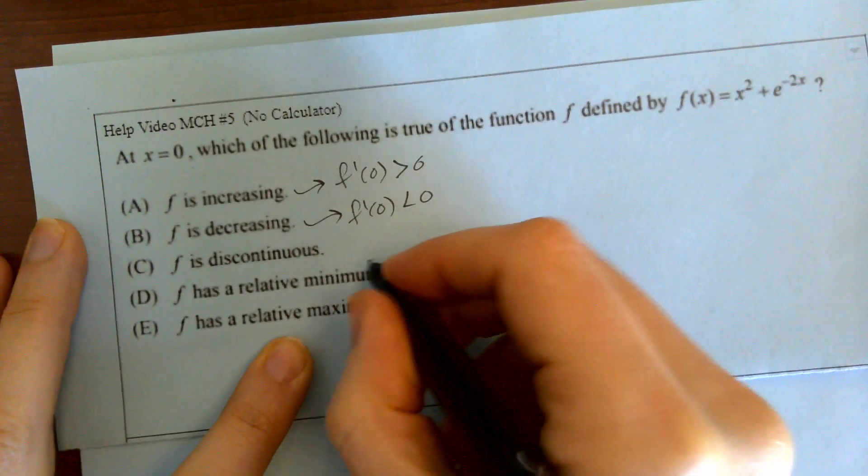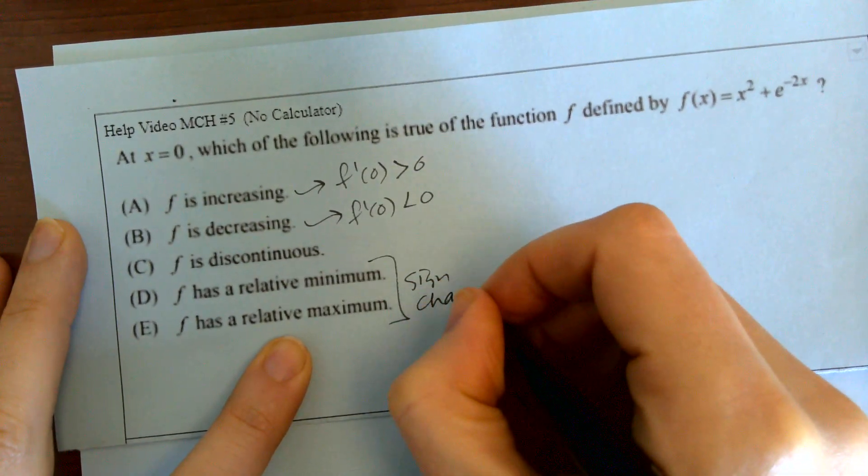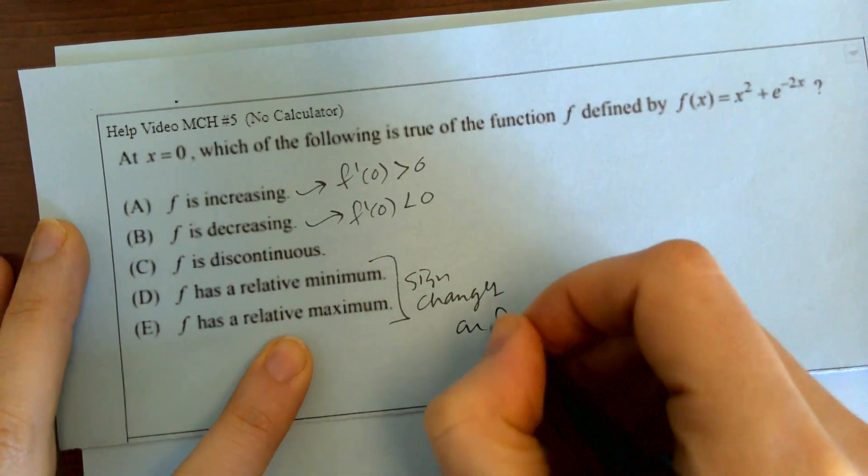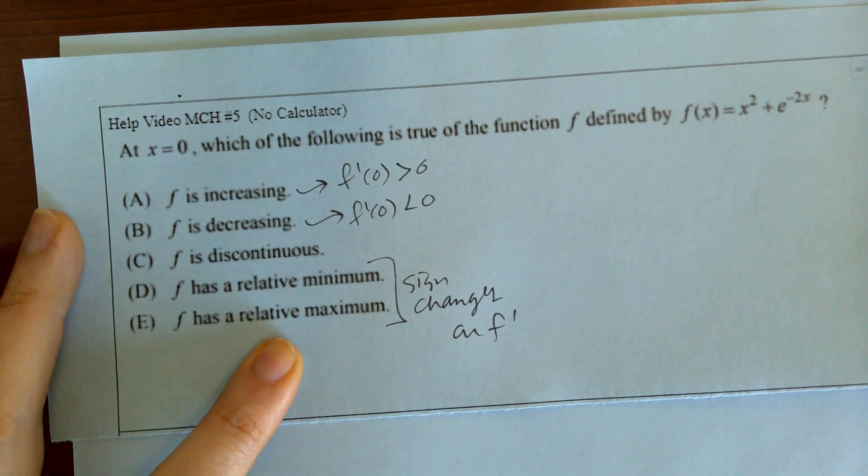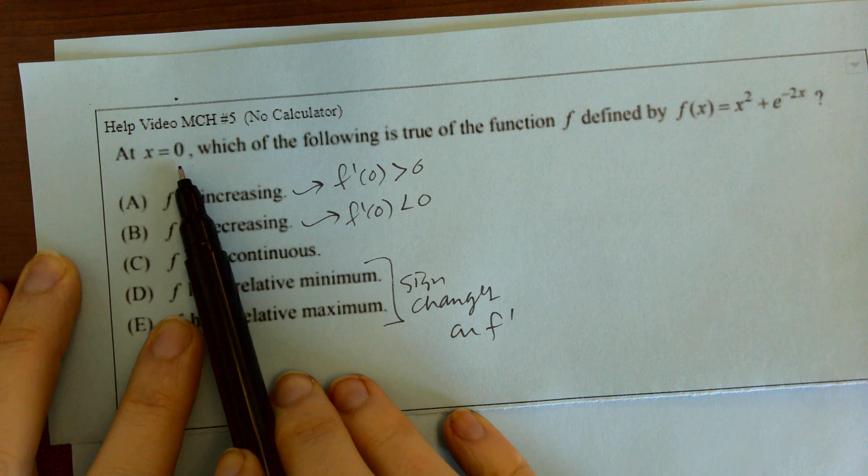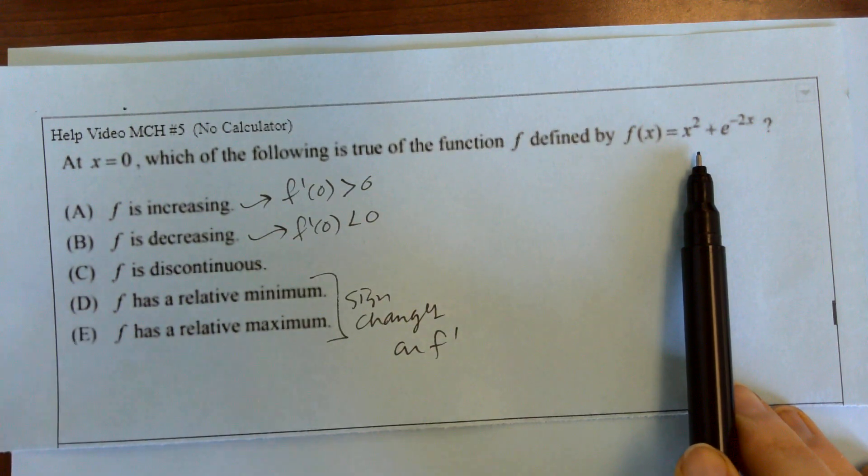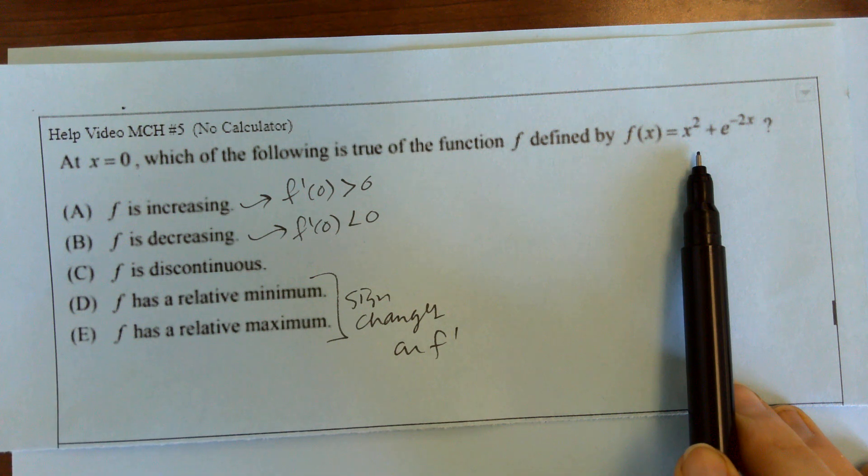This I'll talk about in a second. And then for these ones, we would need sign changes on f prime. Now for f to be discontinuous at x equals zero means that if you plug zero into the original function, you end up getting something that's undefined, usually zero in the denominator.